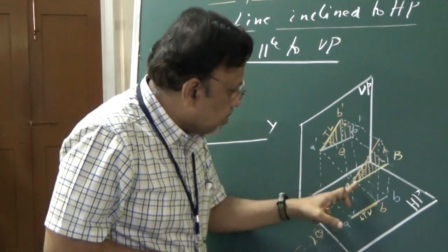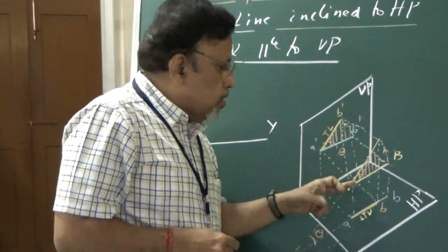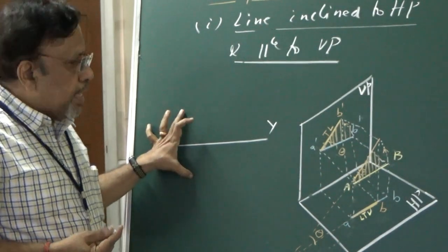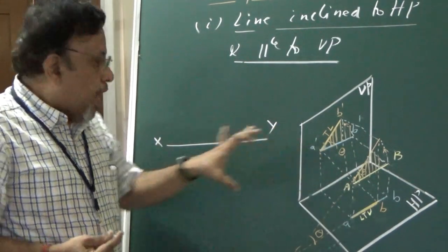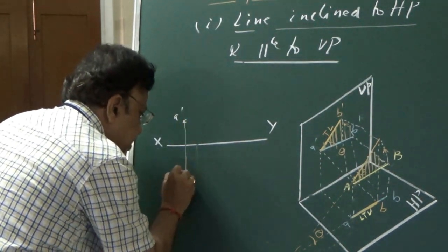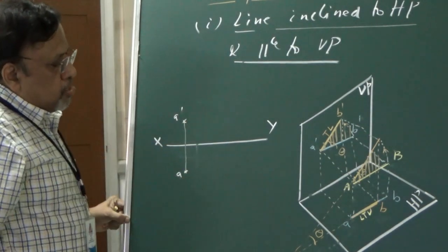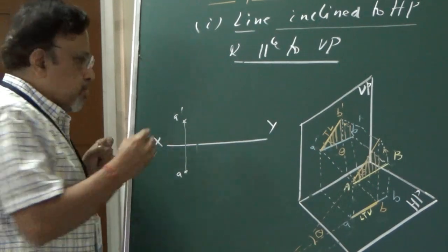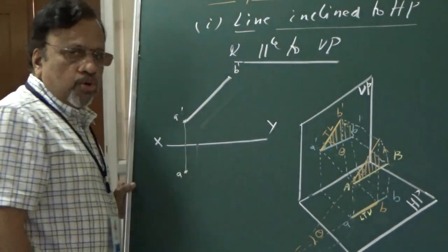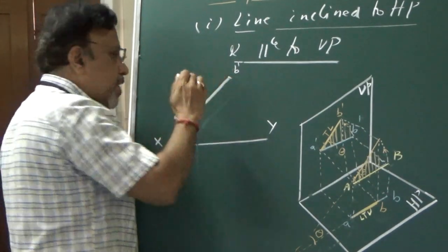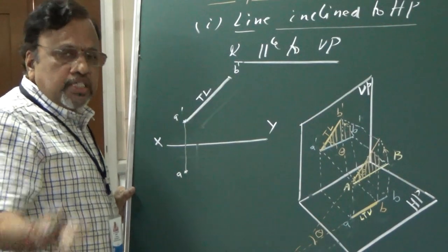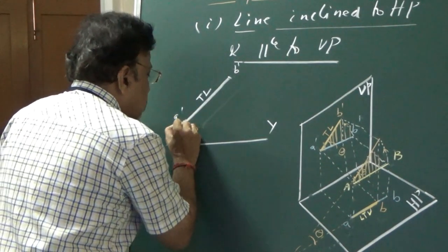If I know the position of end A, I will get its front view projection as A dash. The true length of the line is seen in the front view. So I draw the front view: starting from A dash, the line of true length is drawn at inclination theta — corresponding to the inclination of the line with reference to HP, since details of HP are seen in the front view. I indicate this angle as theta.